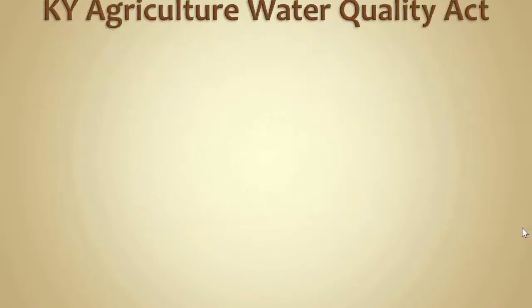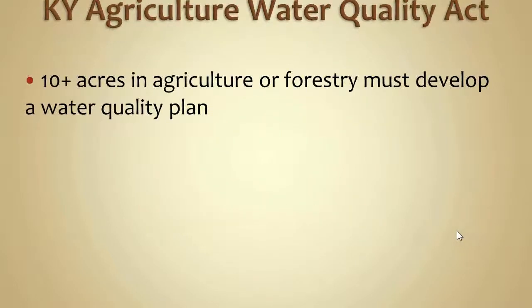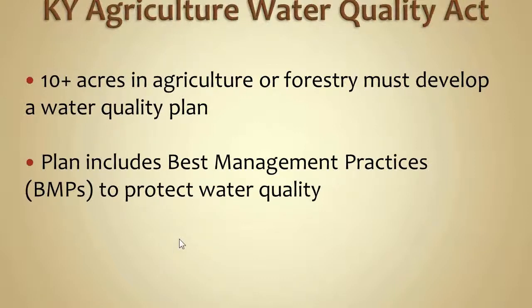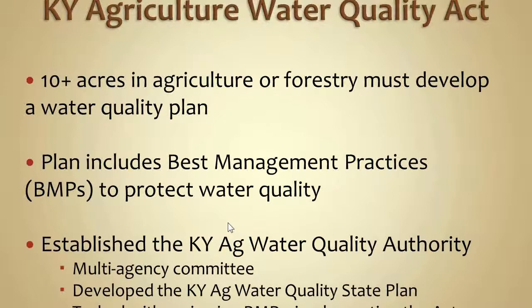You're probably saying, what is an Ag Water Quality Plan? Back in 1994, the Kentucky General Assembly enacted the Kentucky Agriculture Water Quality Act. What that basically said was that any landowner who had ten acres or more in agriculture or forestry production must develop a water quality plan. These plans include best management practices that will protect water quality. It also established the Kentucky Agriculture Water Quality Authority, a large multi-agency committee that developed the state water quality plan, and they continually review best management practices and ways to better educate landowners about the Ag Water Quality Act.